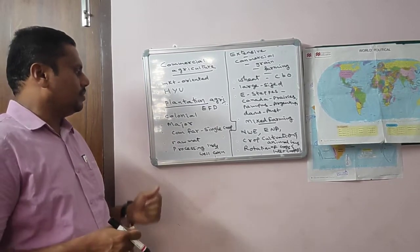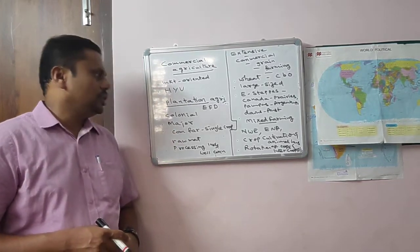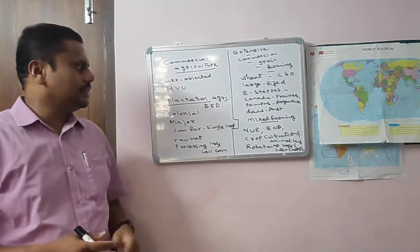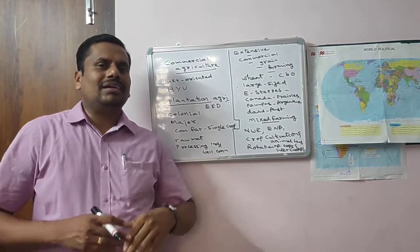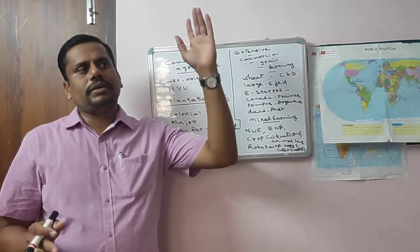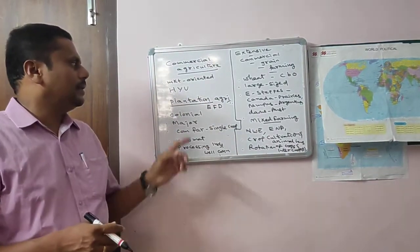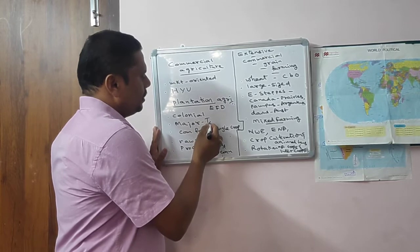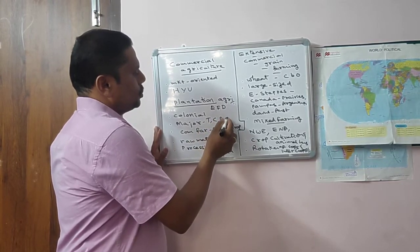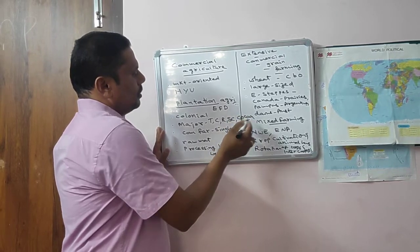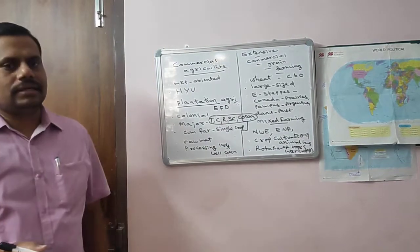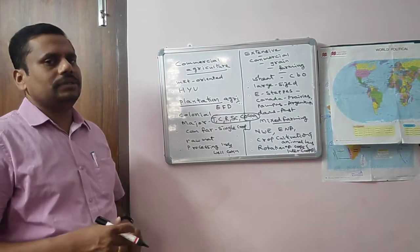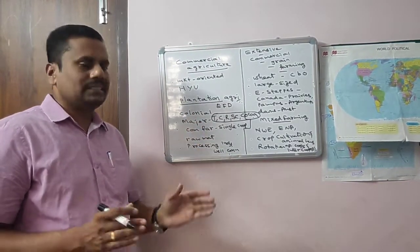Plantation agriculture is a method of agriculture where a single crop is grown in a large area. You don't find other crops — you can see the same single crop across the large area. The major plantation crops are tea, coffee, rubber, sugarcane, cocoa, and in some books banana or plantain is also included.